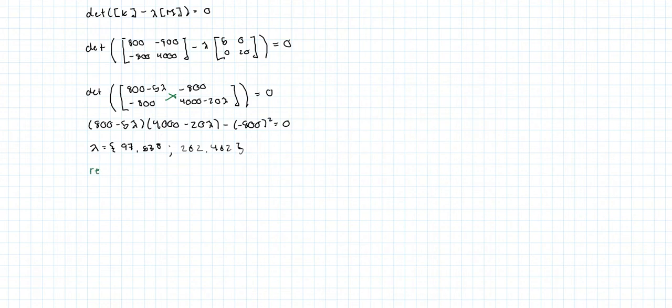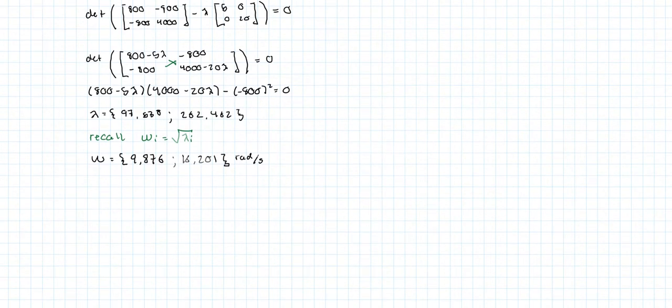Recall that the i-th natural frequency is equal to the square root of the i-th eigenvalue. So we have the natural frequency vector, which is equal to the square root of 97.538, which is 9.876, and then the square root of 262.462, which is 16.201 radians per second. So that's a partial answer. Let's highlight it.